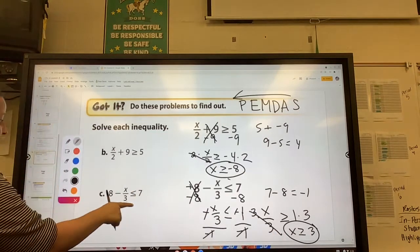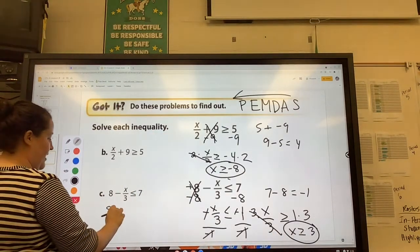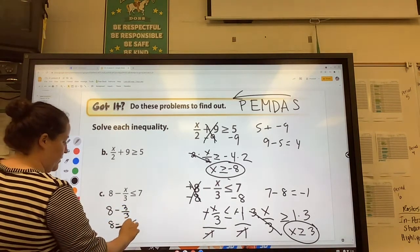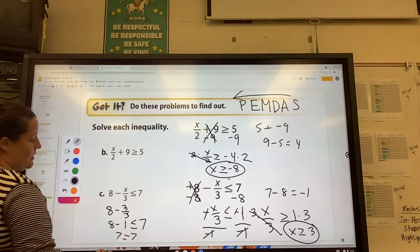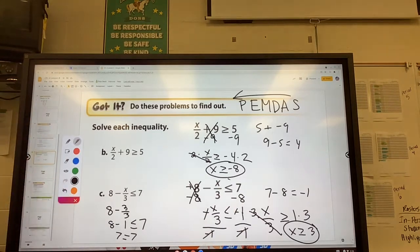And you should probably check your work because this won't make sense. So let's check it. 8 minus 3 over 3, so that would be 1. So 8 minus 1 is greater than or equal to 7, which is true because 7 equals 7. And if you tried another number, it would probably check out to be correct. Wow, that was a long video. I apologize.